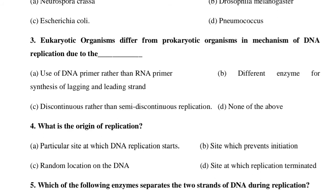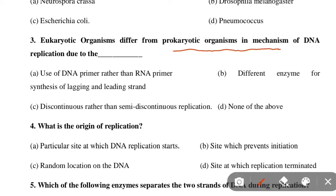Next MCQ: Eukaryotic organisms differ from prokaryotic organisms in the mechanism of DNA replication due to: use of DNA primer rather than RNA primer; different enzymes for synthesis of lagging and leading strand; discontinuous rather than semi-discontinuous replication; or none of the above. Option C is correct — discontinuous rather than semi-discontinuous replication.